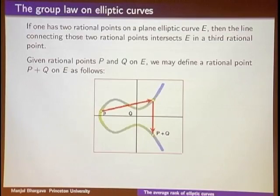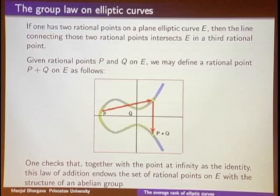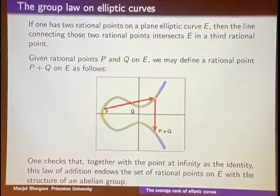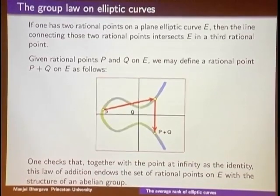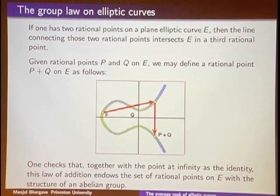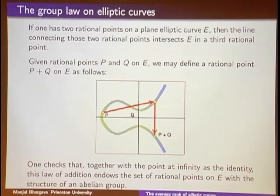That's a way of taking two rational points and producing a third point P + Q. Together with the point at infinity — if you take any vertical line, it intersects the elliptic curve at two points and a third point at infinity — taking that as the identity and using this addition law turns the set of rational points into an abelian group. It's clearly commutative by definition, though associativity requires verification.